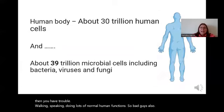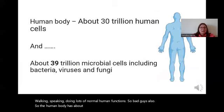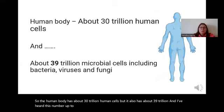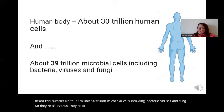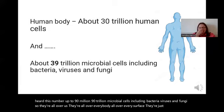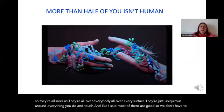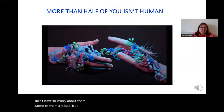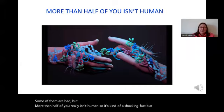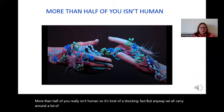The human body has about 30 trillion human cells, but it also has about 39 trillion — and I've heard numbers up to 90 trillion — microbial cells, including bacteria, viruses, and fungi. They're all over us, all over everybody, all over every surface. They're ubiquitous around everything you do and touch. And like I said, most of them are good, so we don't have to worry about them. But more than half of you really isn't human — that's a kind of shocking fact.